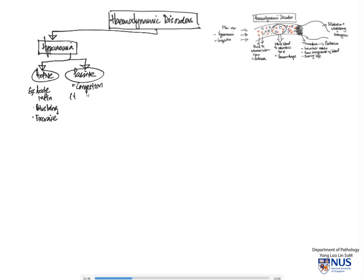When there is passive hyperemia, this is known as congestion. And this is because there is reduced outflow of blood from that particular location. And we can see this in conditions like congestive cardiac failure and also in venous occlusion.